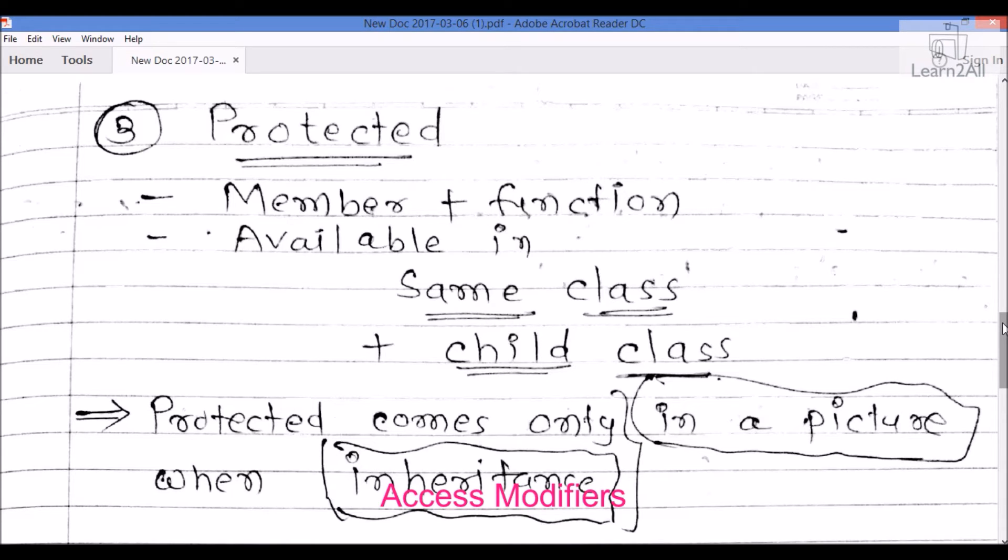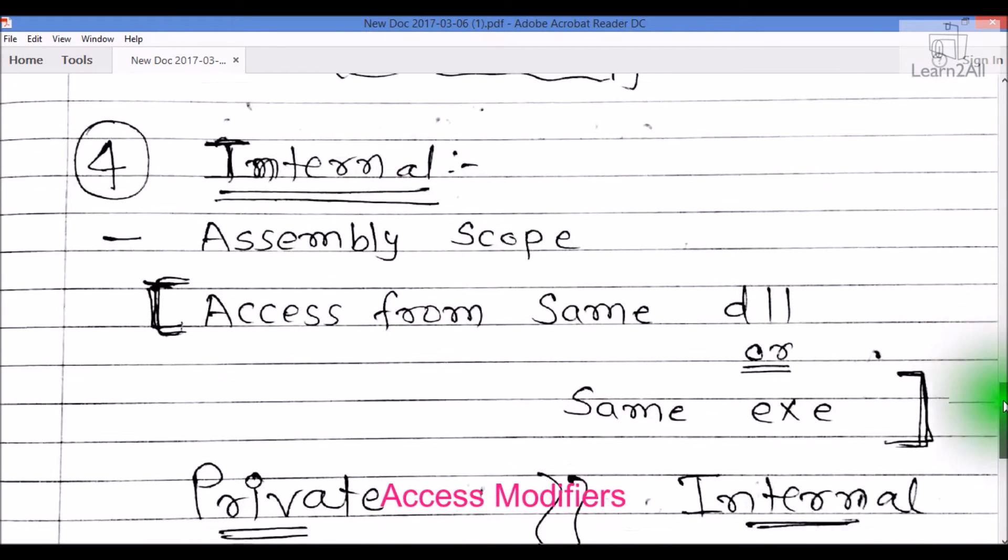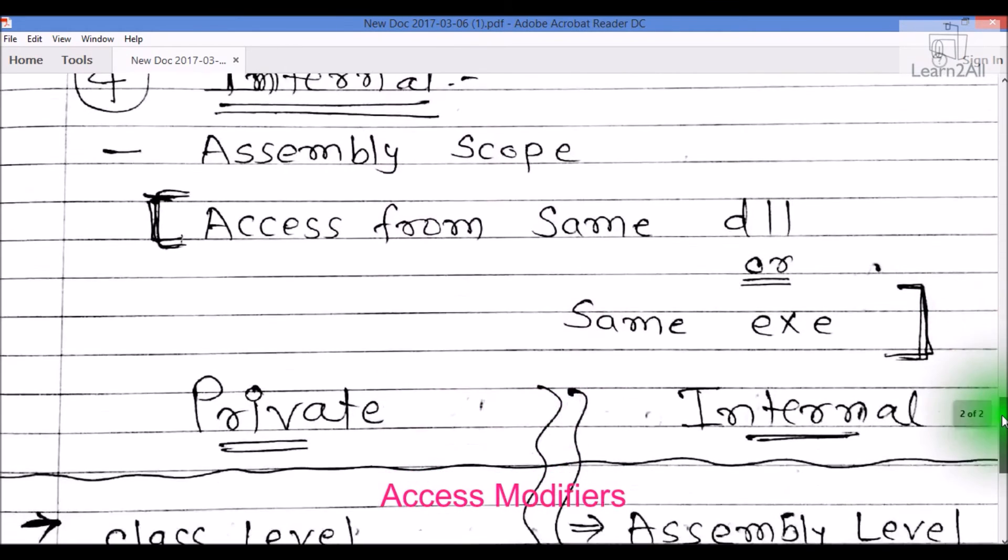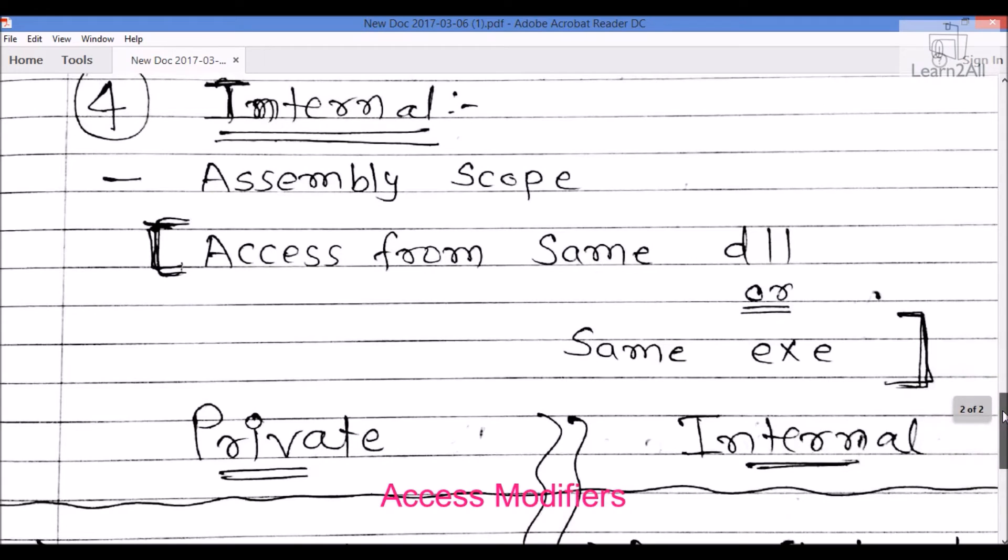And the last one is internal. Internal is an assembly-level scope. What does assembly-level scope mean? Suppose I have created one solution and I have created one internal method in that particular class. If I want to access that method throughout the application - in the sense, that particular DLL or EXE scope - I can easily access it via the internal access modifier.